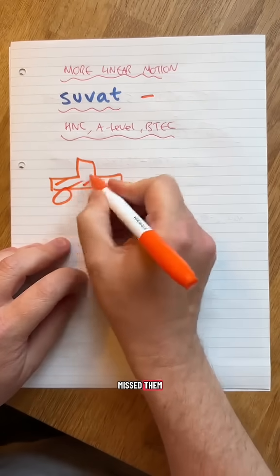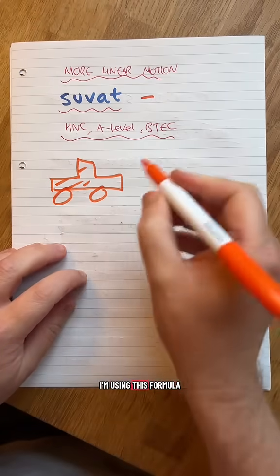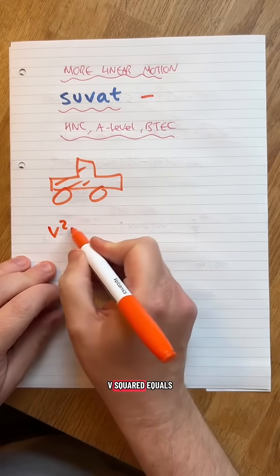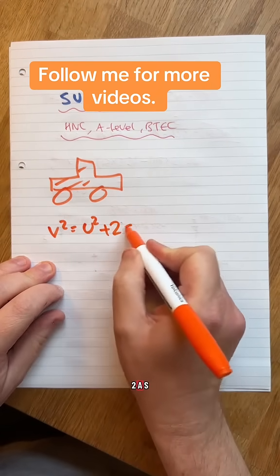Here's my car. Watch my videos if you've missed them. I'm using this formula. V squared equals U squared plus 2AS.